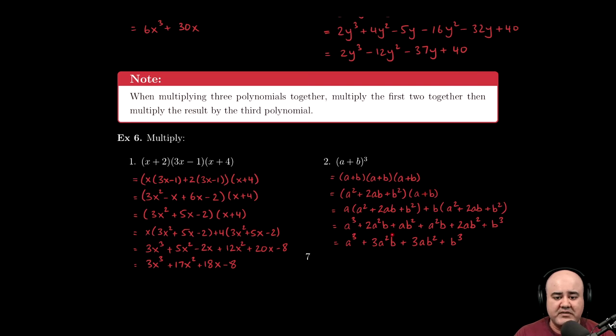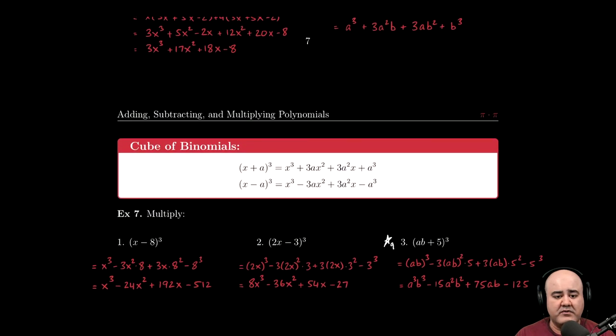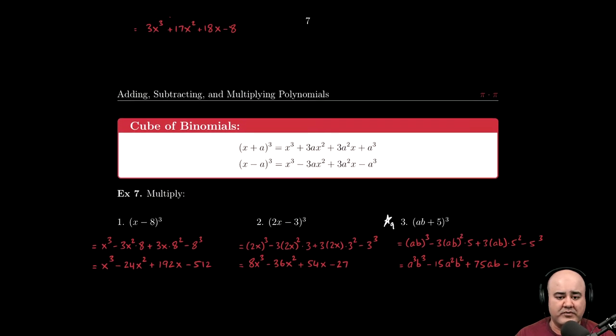Once we clean up this, and please pause the video. Make sure that all of this is done correctly. We get a³ + 3a²b + 3ab² + b³. And in fact, this is another formula that it would benefit you to memorize. This is the cube of sum or the cube of binomial formula.